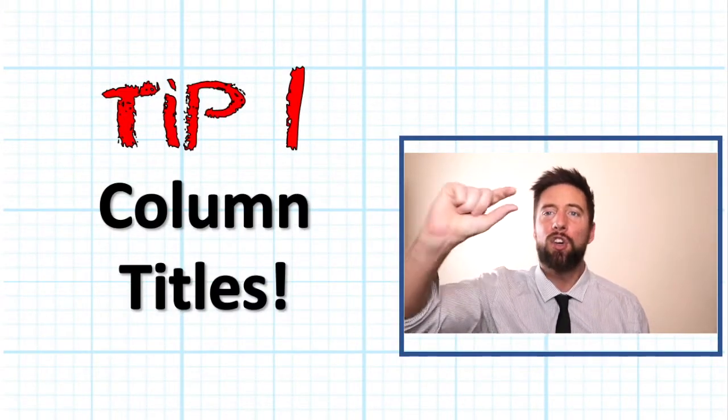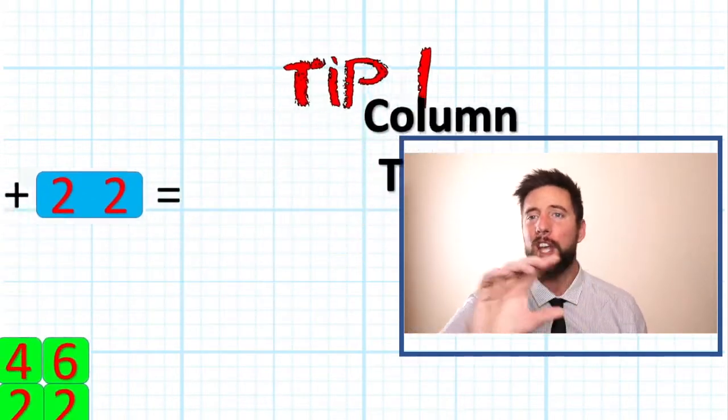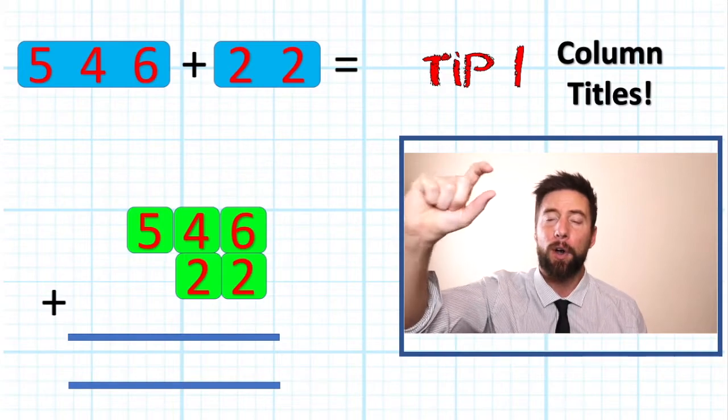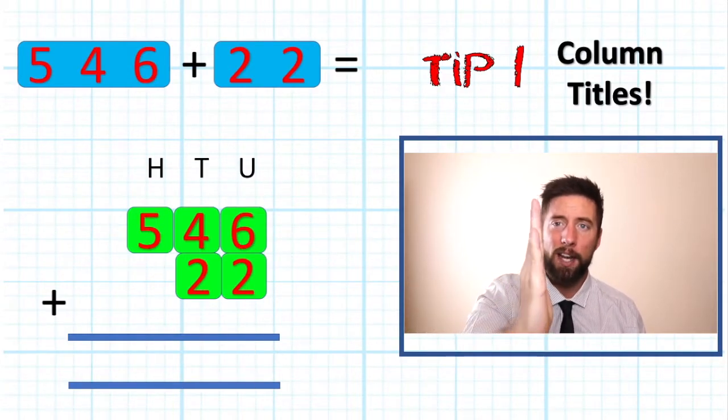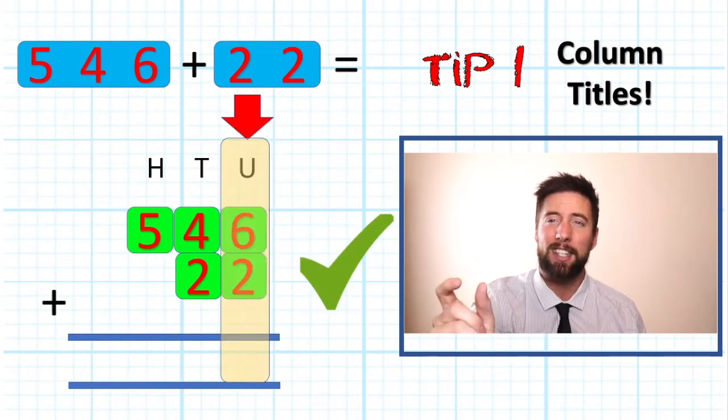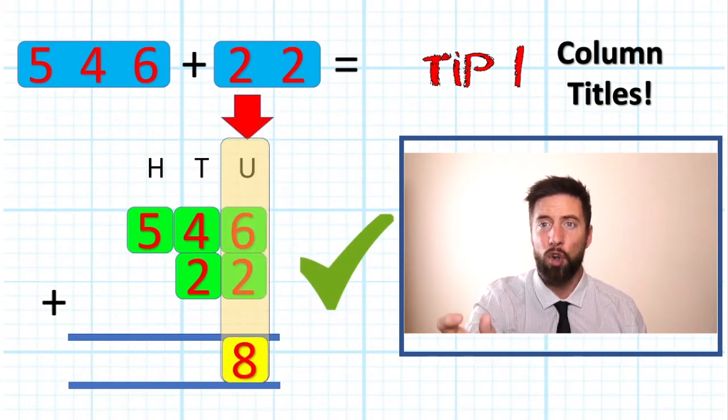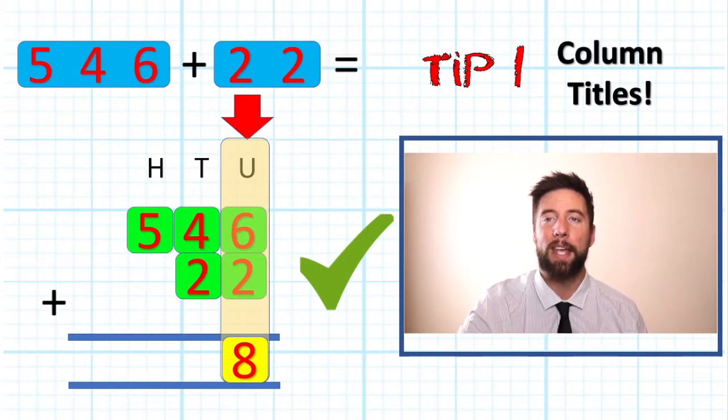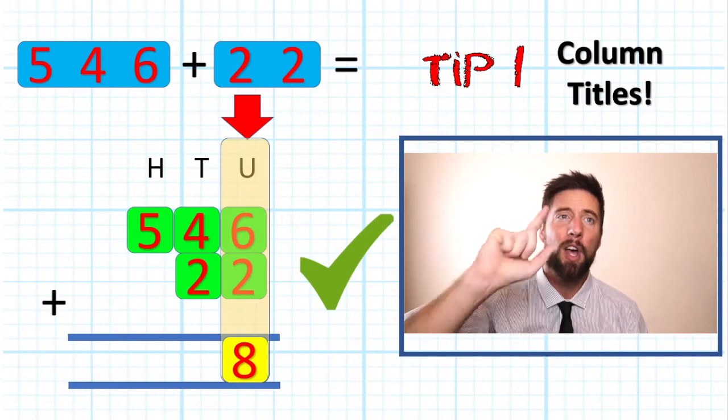Okay, tip number one, your column titles. Don't just settle for putting your numbers and your equals lines across. Put your column titles in, it will keep things in the correct columns. You know when you're adding up your units, you have to put your units answer in the right column and it's all nice and neatly presented for you. It will avoid making small mistakes. Tip number one, column titles.